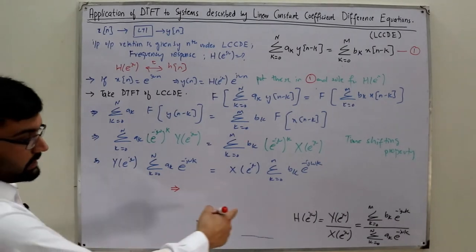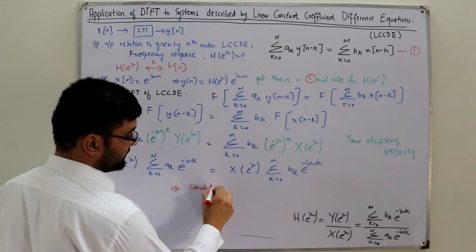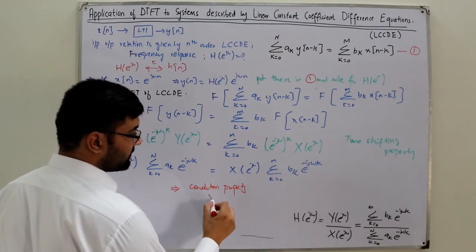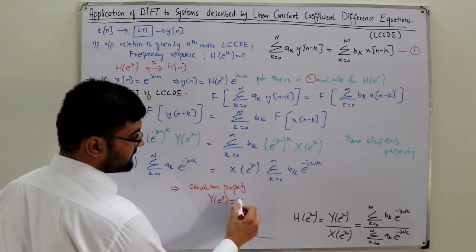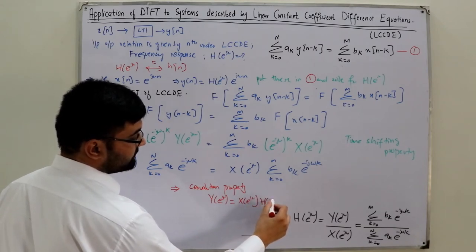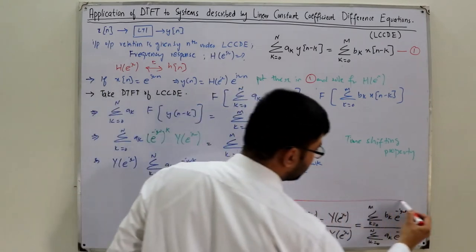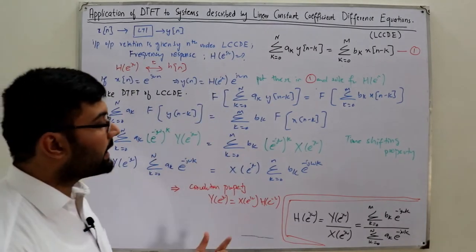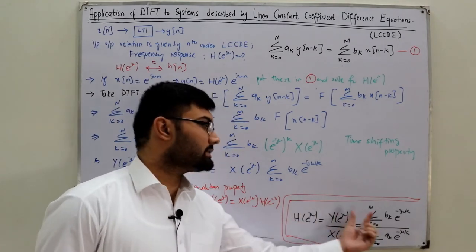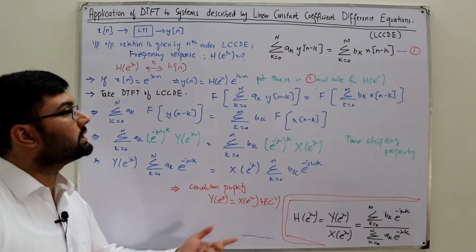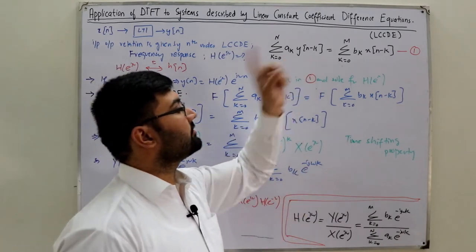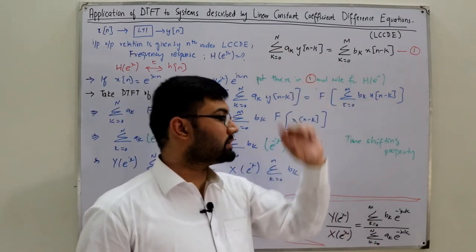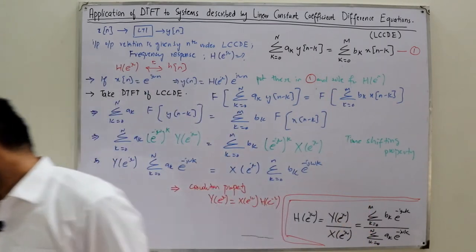This result comes from the convolution property, which states Y(e^jω) = X(e^jω) times H(e^jω). This is how you find the frequency response just by looking at the equation. b_0 is the term with no difference in x, b_1 the first difference, b_2 the second; similarly a_0 is the output term with no difference, a_1 the first difference, a_2 the second.